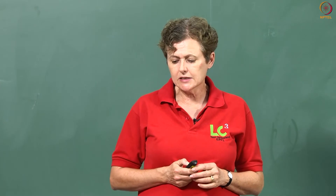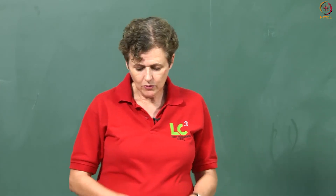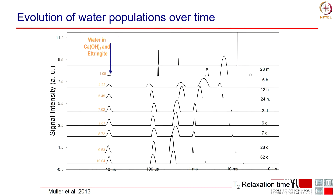The spectra we obtain have a part from the quadrature solid echo — what we call the solid water — which corresponds to the water in the crystalline phases. We make a careful calculation of the amount of water here, and cross-check using x-ray diffraction to know how much calcium hydroxide and ettringite we have. We can calculate the amount of water in those phases and verify that this signal corresponds very closely to the water in the crystalline hydrates — in this example, calcium hydroxide and ettringite.